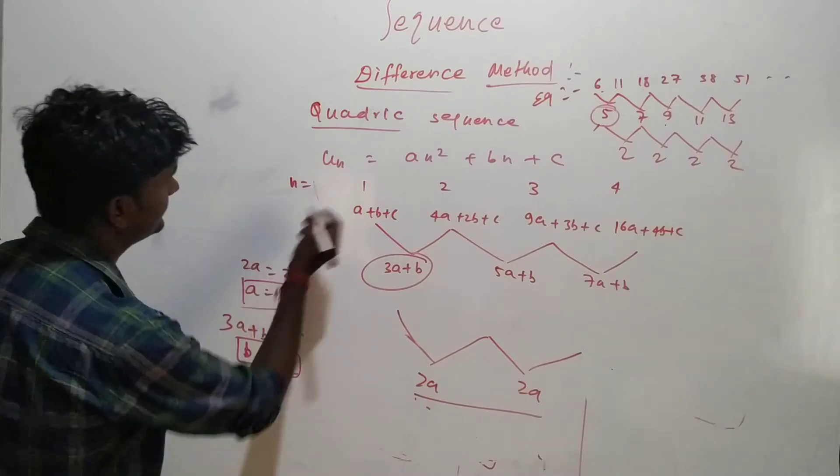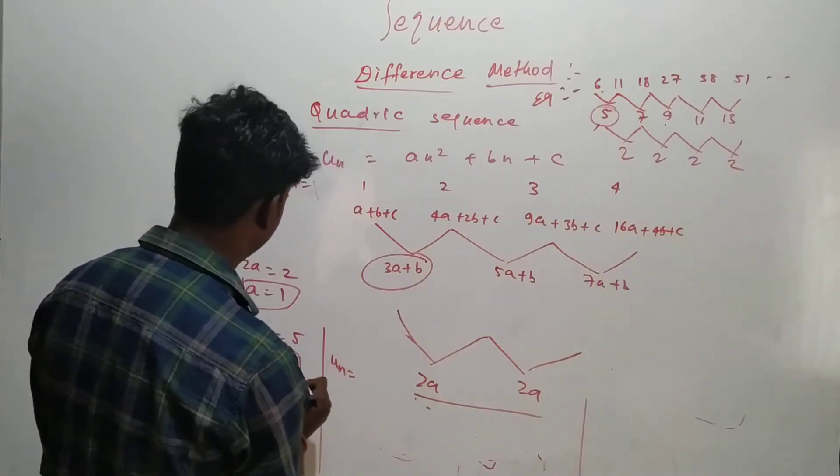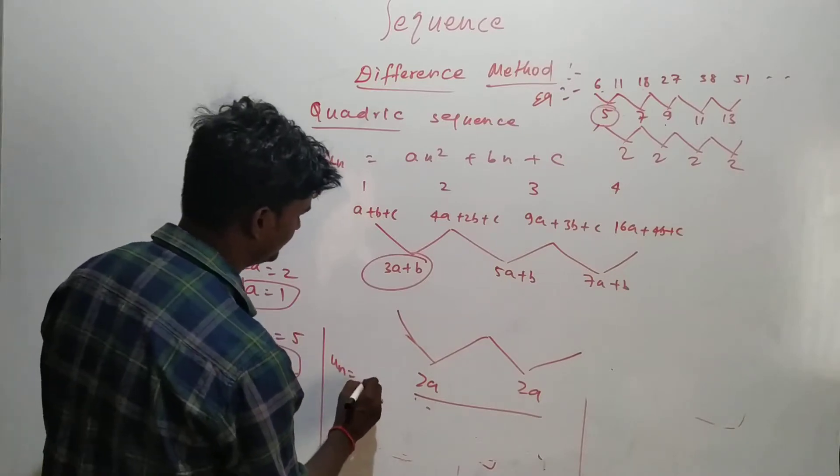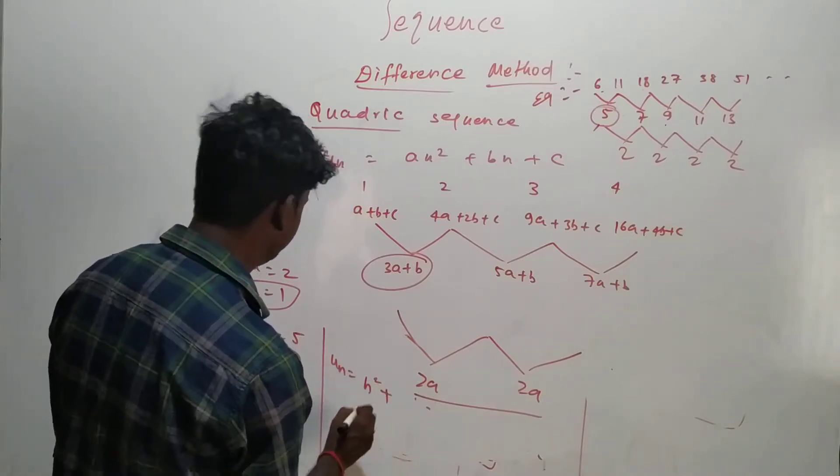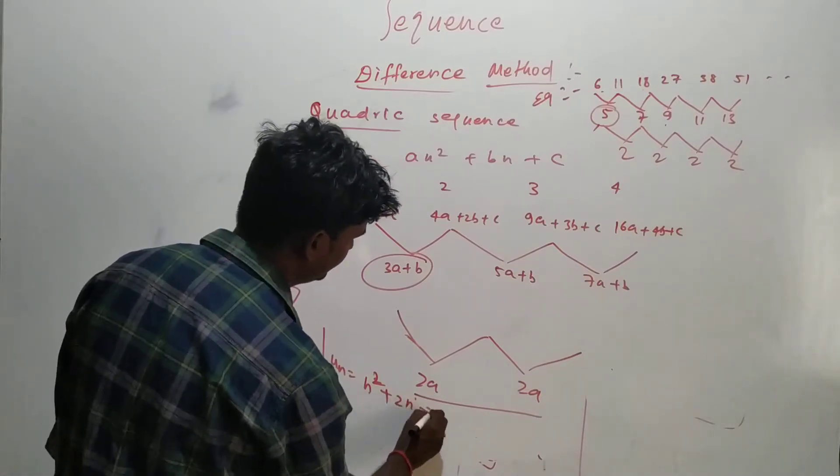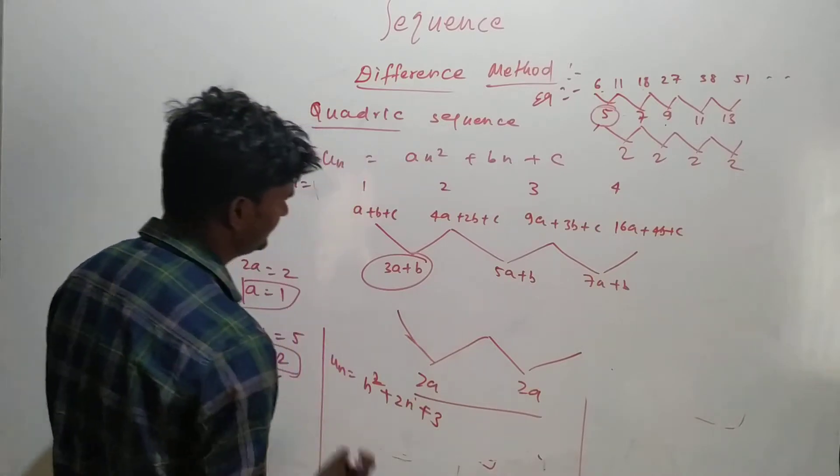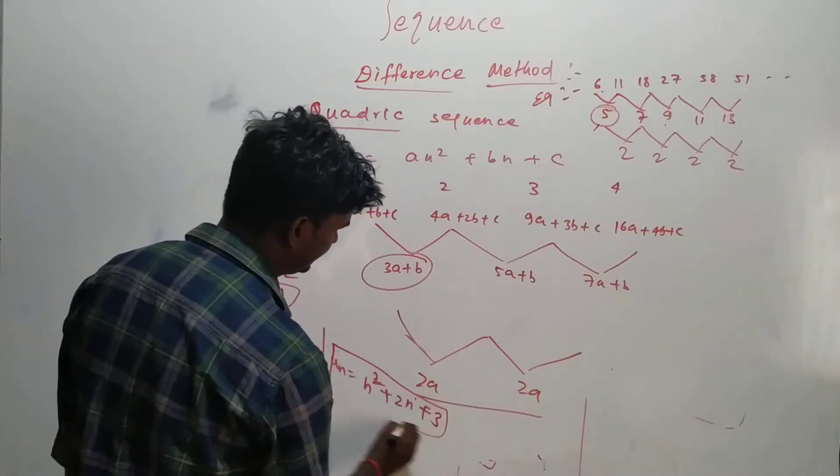Now you just substitute in this given equation. u_n will be equal to a n square. a is basically 1, so n square plus b is 2, so 2n plus c is 3. So this is your quadratic sequence.